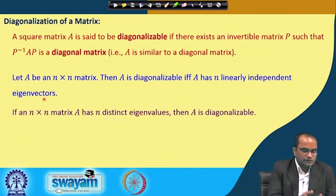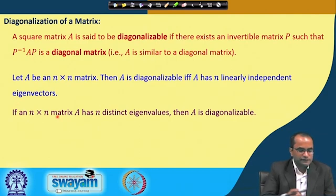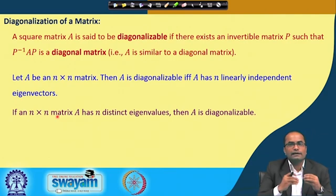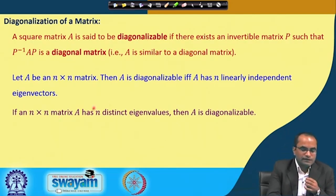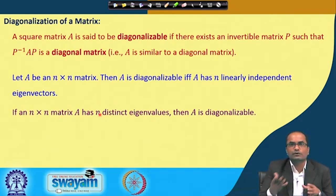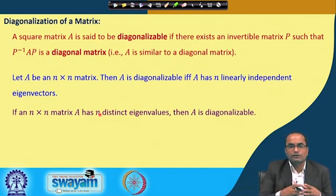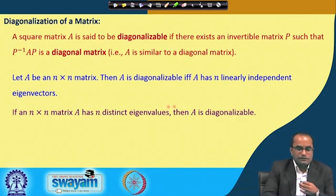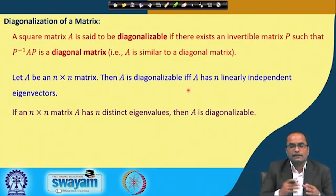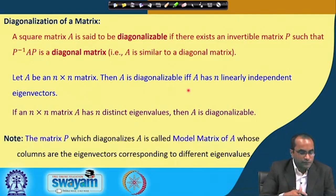A corollary: if an n×n matrix A has n distinct eigenvalues, then A is also diagonalizable. The reason is clear—corresponding to distinct eigenvalues we get linearly independent eigenvectors, a result seen in the previous lecture. So this second result is essentially the same as the first: A is diagonalizable if and only if it has n linearly independent eigenvectors.